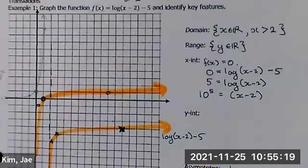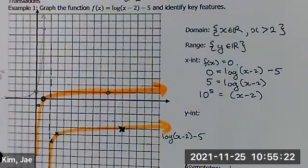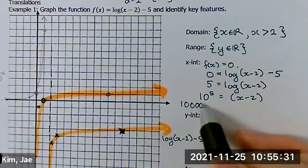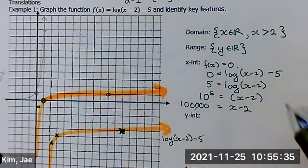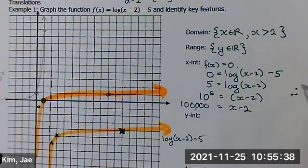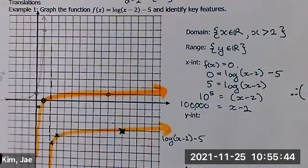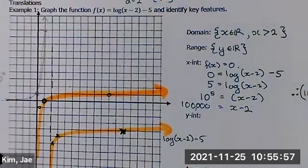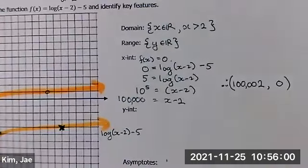And what's 5 represent? The exponent. And we can say that 10 to the power of 5 is equal to x minus 2. So it's the opposite of what we were working on in the previous lesson. So 1 with five zeros behind it is equal to x minus 2. Therefore, what is my x-intercept?